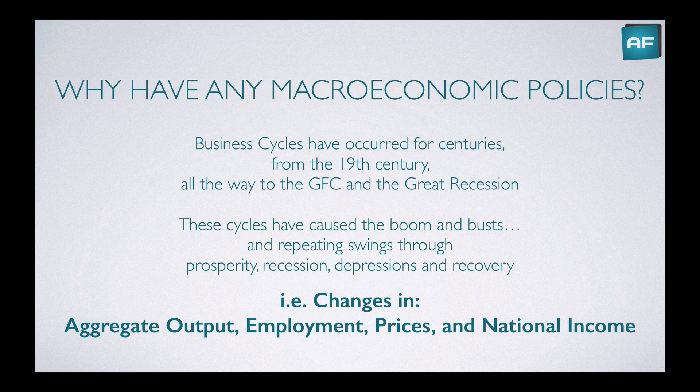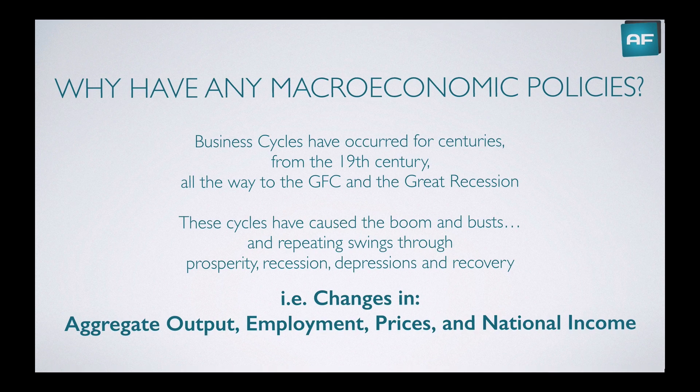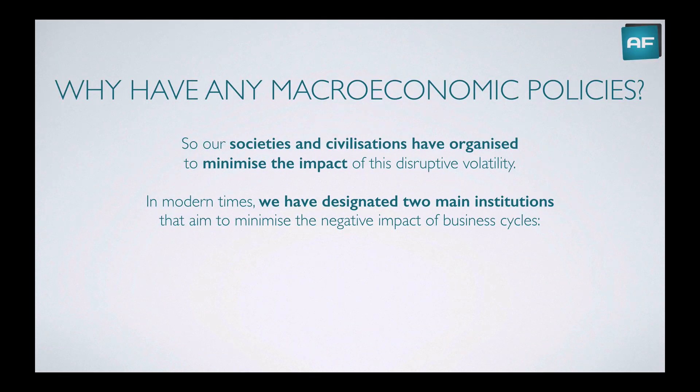When we talk about boom and bust cycles, the economic indicators are generally changes in aggregate output, employment, prices, and national income — like GDP and the unemployment rate, the inflation rate, and GNI or wages and business profits, and so forth. We've had these repeating periods of booms and busts.